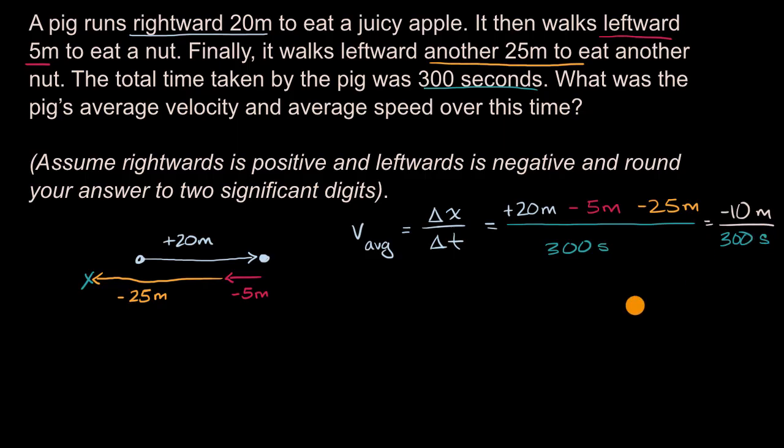So the average velocity is going to be equal to negative 1/30th meters per second. The negative specifies that on average the velocity is towards the left.